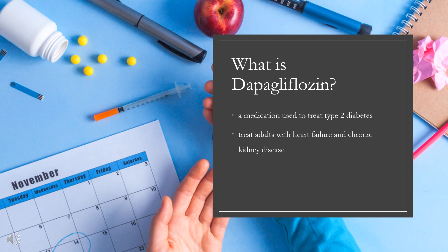Dapagliflozin, sold under the brand names Farxiga and Forxiga, among others, is a medication used to treat type 2 diabetes. It is also used to treat adults with heart failure and chronic kidney disease. Common side effects include hypoglycemia, urinary tract infections, genital infections, and volume depletion. It was developed by Bristol-Myers Squibb in partnership with AstraZeneca. It is on the World Health Organization's list of essential medicines. In 2020, it was the 217th most commonly prescribed medication in the United States, with more than 2 million prescriptions.